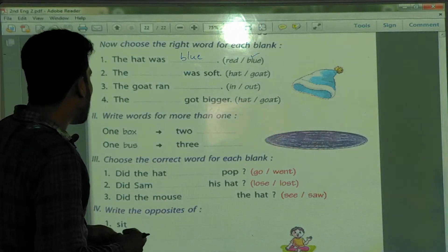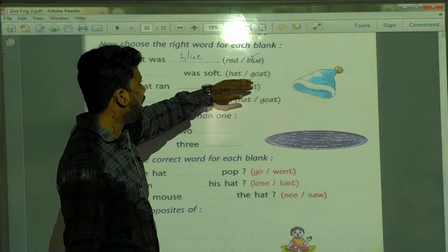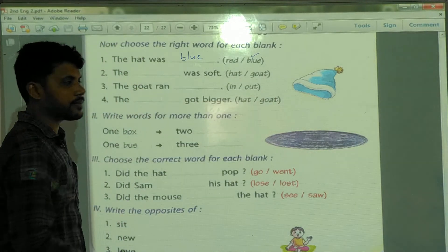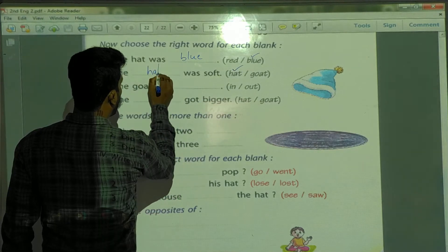Next two. The blank was soft. Which one is soft? Hat or goat? Which one? The hat is very soft and warm also.